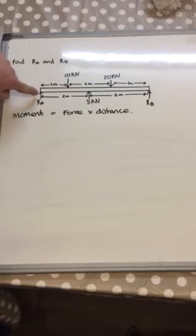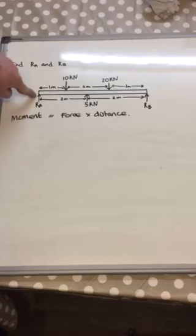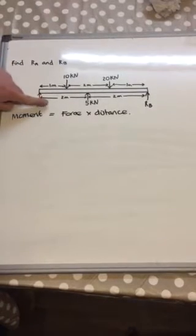If we take moments around this point, then Ra would have a zero moment because its distance from the fulcrum would be zero. So we could ignore Ra.